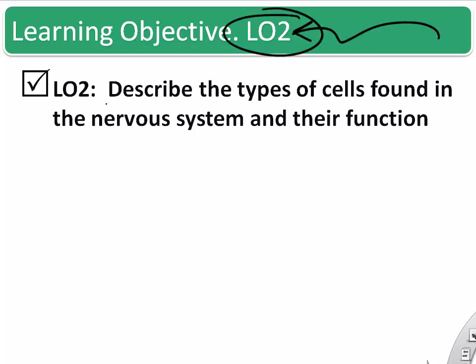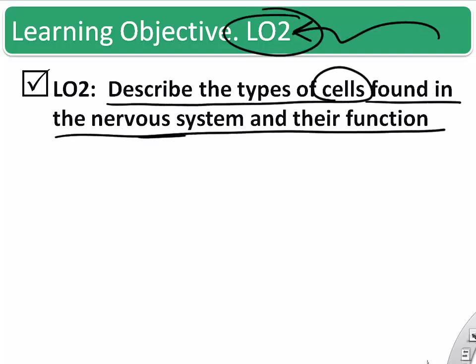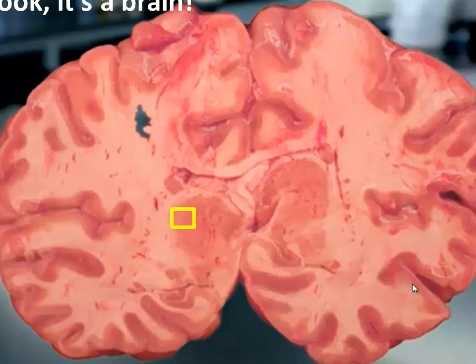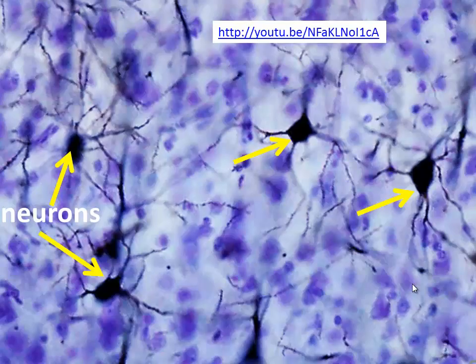The next learning objective is to describe the types of cells found in the nervous system and review their function. As with all organ systems, we look at cells — and the brain is no different. The most famous cells are the neurons, but there are plenty of support cells as well.